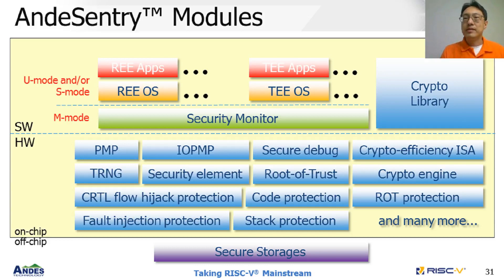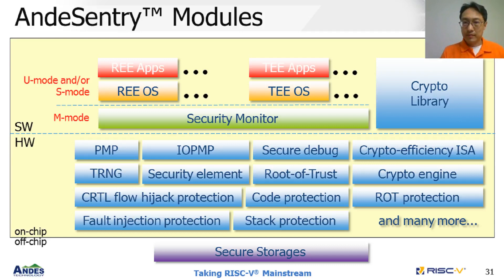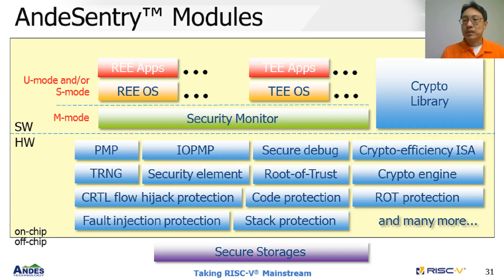These are the modules included in ND Sentry. It consists of off-chip storage, on-chip hardware IPs, and a software stack. As to off-chip storage, it supports up to tier-4 plus security storage, which can mitigate various physical attacks. As to on-chip hardware IPs and components, it has PMP, IOPMP, random number generator, crypto engine, security element, root of trust, security debugger, and many more. By taking advantage of these hardware modules, the software stack provides a security foundation to architect your application. So far it includes security boot, security manager, TEE, RTOS, and the crypto library.